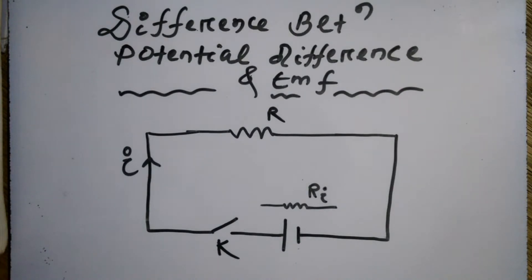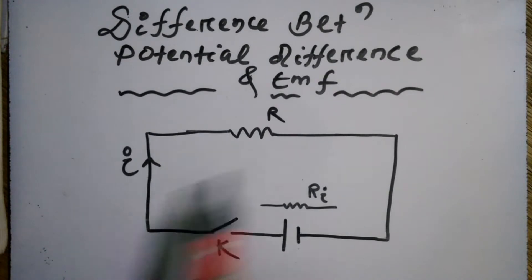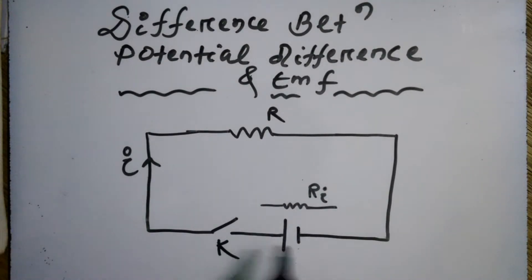The unit of potential difference and EMF are the same — both are measured in volts. The unit of potential difference is volt and the unit of EMF is also volt.